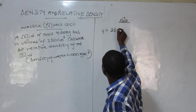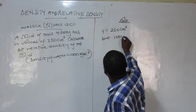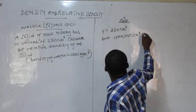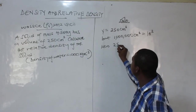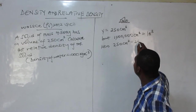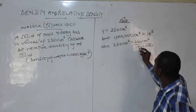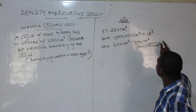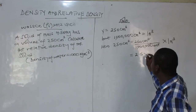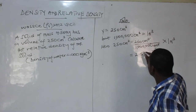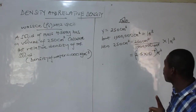The volume is 250 cm³. Using the conversion: 1,000,000 cm³ equals 1 m³. So 250 cm³ equals 250 divided by 1,000,000 m³, which gives 2.5 × 10⁻⁴ m³. I have now converted the volume term to m³. Remember from the beginning of the video — knowing how to convert by powers of ten is an advantage.